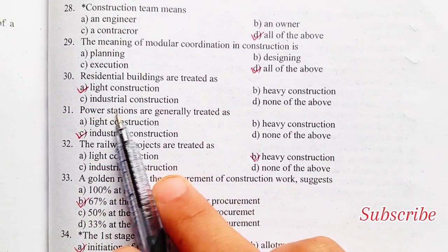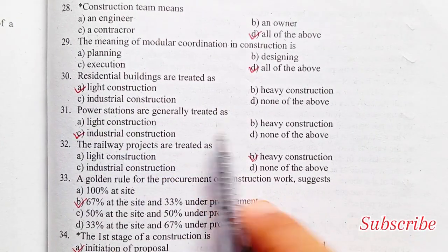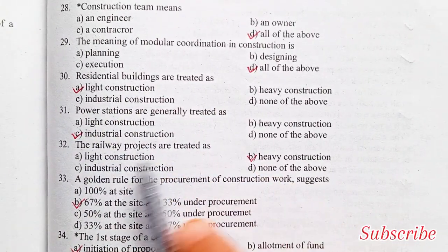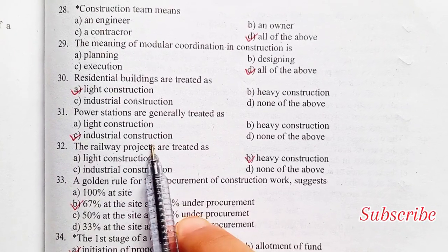Power stations are generally treated as: light construction, heavy construction, industrial, or none of the above. Option C is the right answer — industrial construction.